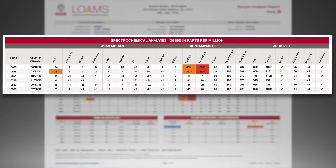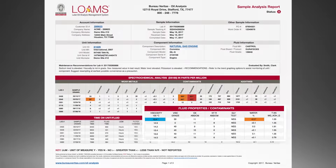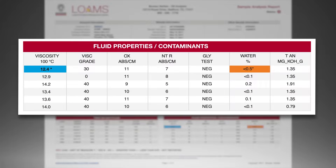In the spectrochemical analysis section, any abnormal or critical results are highlighted in the corresponding status color so that you know which results need your immediate attention. Fluid property test results and results for any testing added to a regular test package will be displayed in this section of the report.